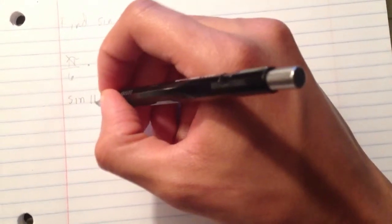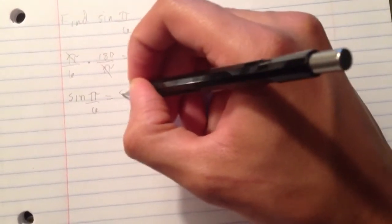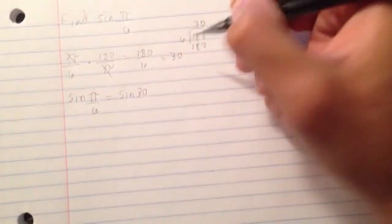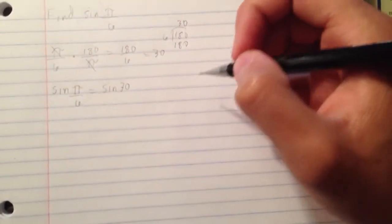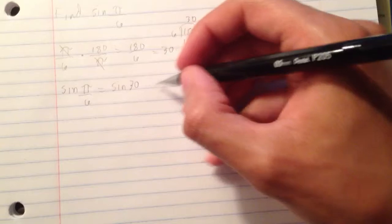So you originally started off with sine pi over 6, but now that goes to sine 30. Now that you have sine 30, you know which triangle to use.